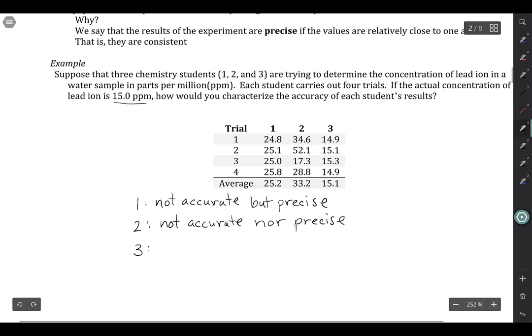Finally, if we look at student three, they're getting an average of 15.1, which is very close to the true value. So, relatively speaking, I would say their results are accurate. And, although it's not always the case, in very rare circumstances would it not be the case, they are consistently getting the same general results here. So they are accurate and they are precise.